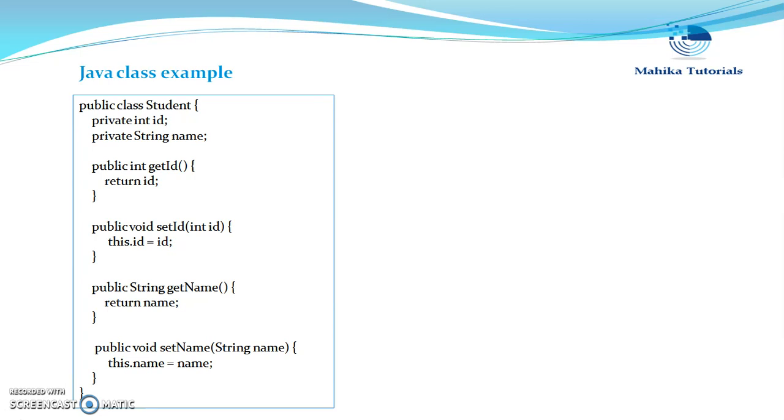And object is the entity for which we are giving the data members and methods. Or simply we can say object is a variable of type class. Okay, class is said to be a user-defined data type and object is defined as a variable of class type.